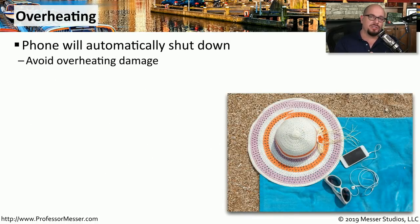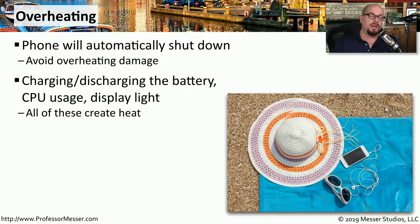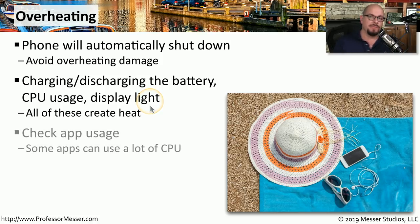Our mobile devices continue to get smaller while the components create more and more heat. If this heat becomes excessive, devices will automatically power themselves off to protect those components. Heat comes from charging or discharging the battery, from heavy CPU usage, and from the display and other components. You can check application usage to see how much battery each app is using, which might point to an app using excessive CPU, and by disabling that app you may be able to reduce the temperature inside your mobile device.